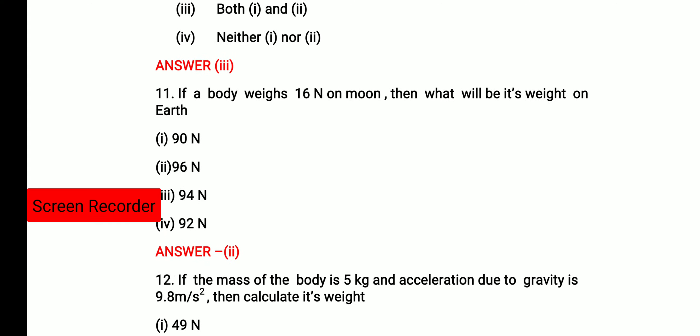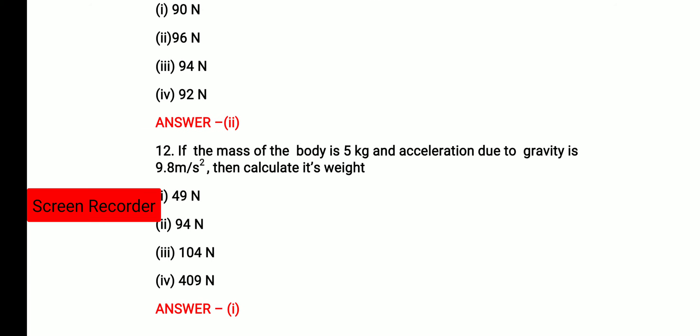Next question, if a body weighs 16 Newton on moon, then what will be its weight on earth? So answer 2, option 2 is correct. Whatever would be the weight of a body on the moon, 6 times of its weight will be on the earth. So 16 into 6 equals to 96. Then if the mass of the body is 5 kg, acceleration due to gravity is 9.8 meter per second square, then calculate its weight. The formula of weight is mass into acceleration due to gravity. So mass is 5 into 9.8. So it will come 49 Newton.